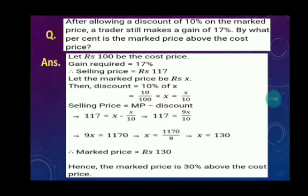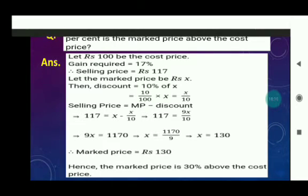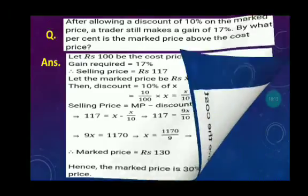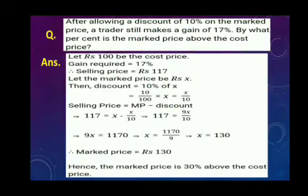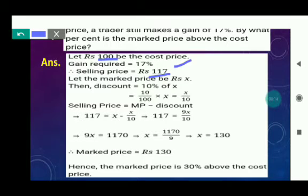Since both cost price and mark price are unknown, we assume the cost price to be Rs. 100. With a gain of 17%, the selling price will be Rs. 117. Let the mark price be Rs. x.